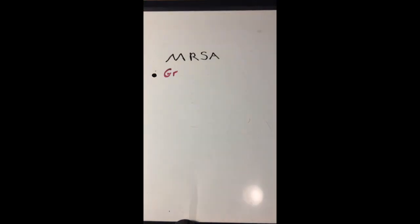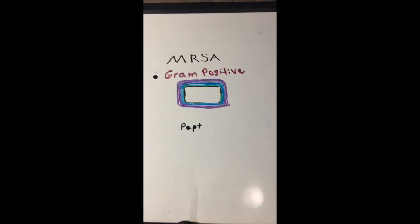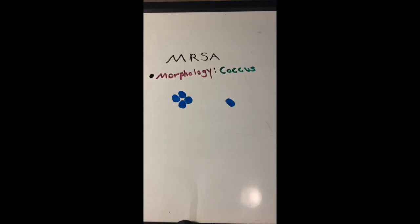MRSA is a gram-positive bacteria that has a thick outer layer wall made out of peptidoglycan. Its morphology is a coccus shape that tends to form clusters.